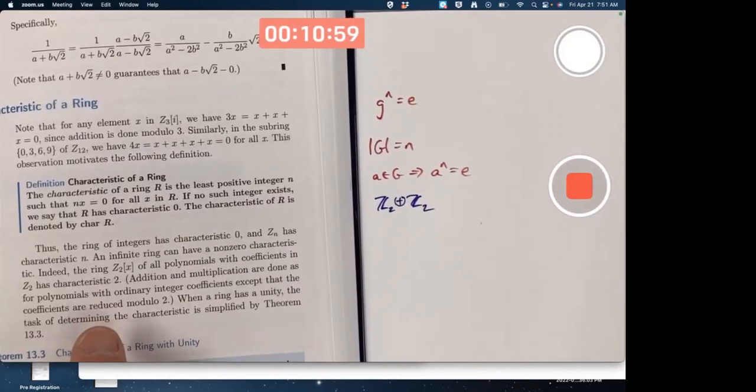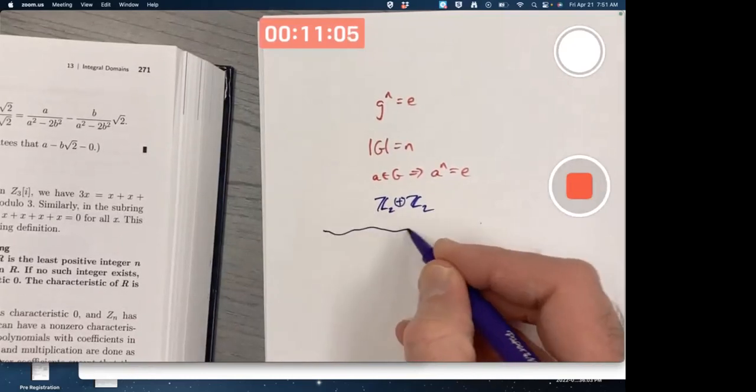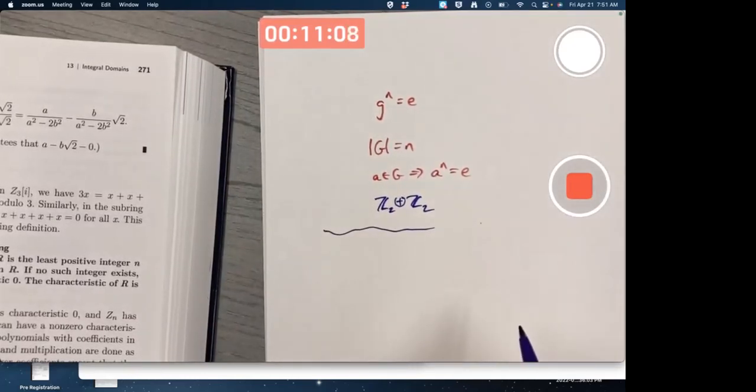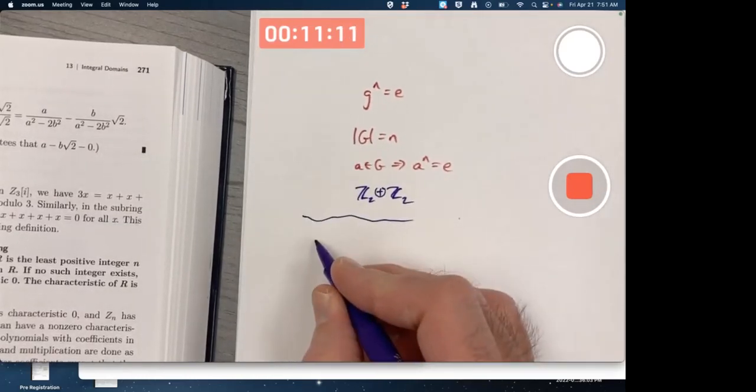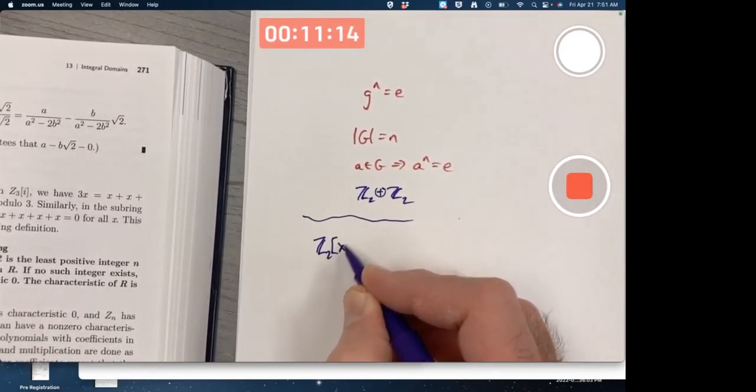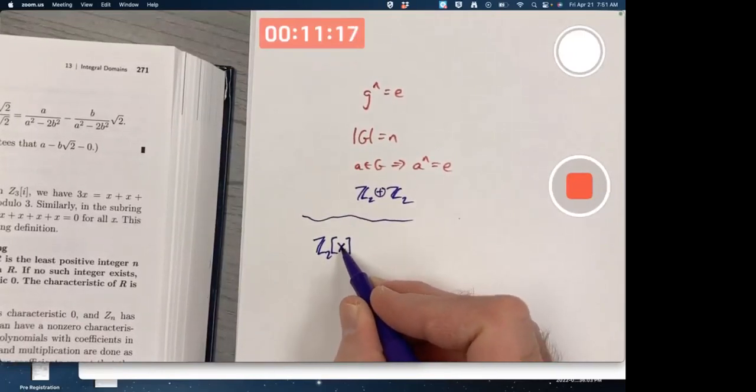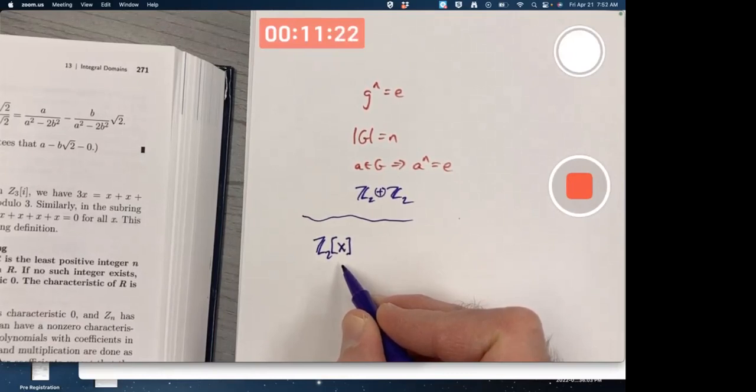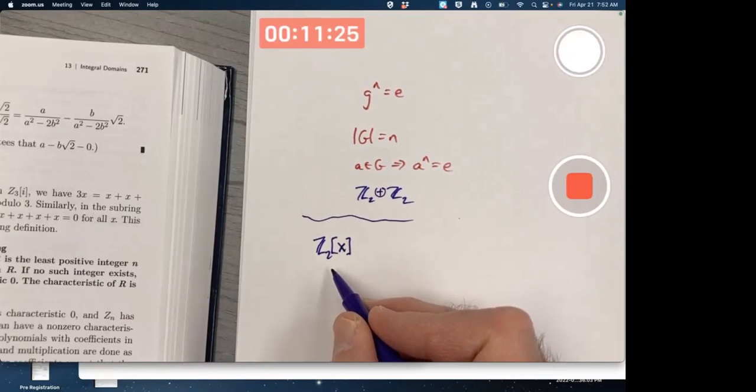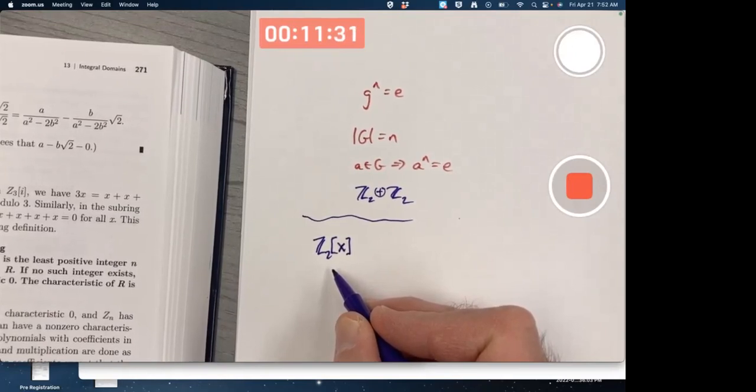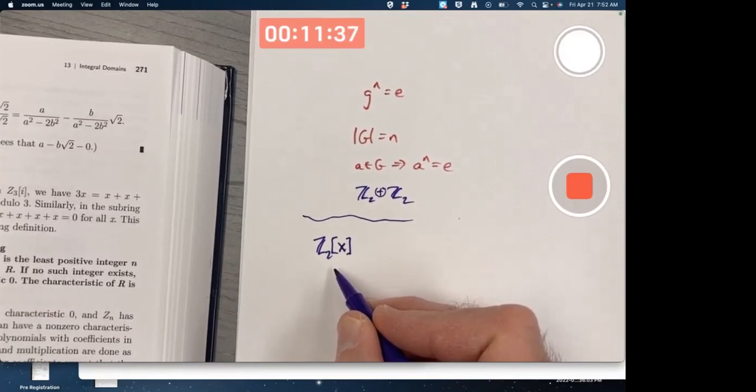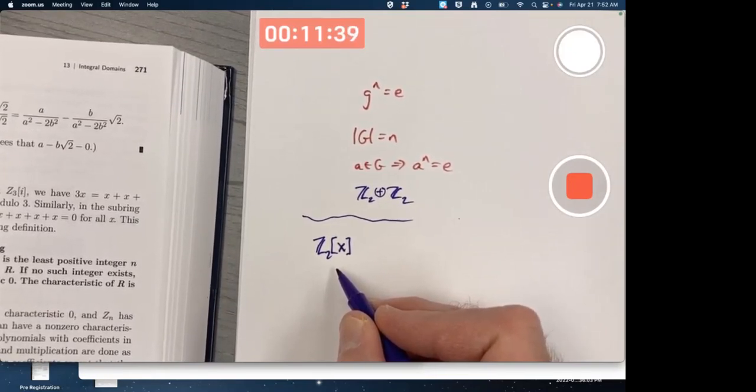What's more interesting with characteristic is thinking about it with infinite rings. Infinite rings can have finite characteristic. I mentioned this last time. A ring like Z2[x]. Remember, always remember for the rest of the semester what this is. It's a ring of polynomials with coefficients in Z2, where you add and multiply polynomials in the usual way, except at the end you mod the coefficients by 2, not the powers. This has characteristic 2, even though it's an infinite ring.